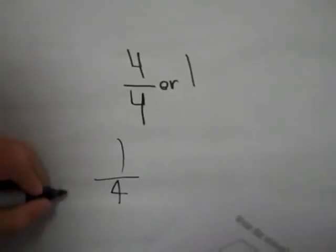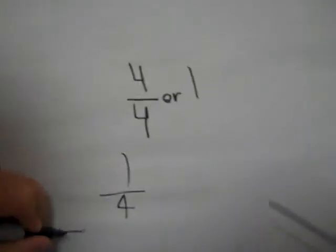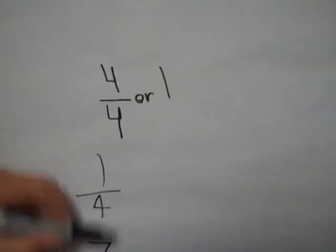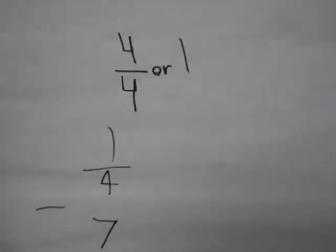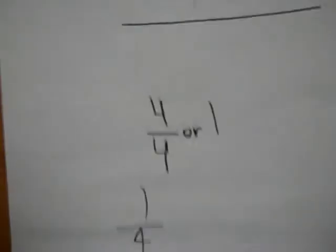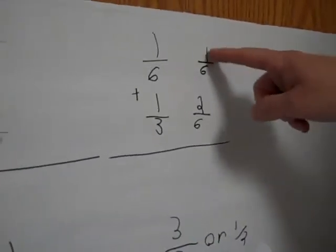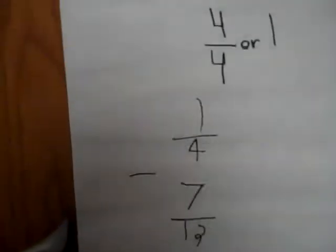The next one is one-fourth minus seven-twelfths. Let me see that for a second. Which one did you just do? One-sixth plus two-sixths? Oh, it's three-sixths. That's good. Is this the next problem? Yeah, this right here.